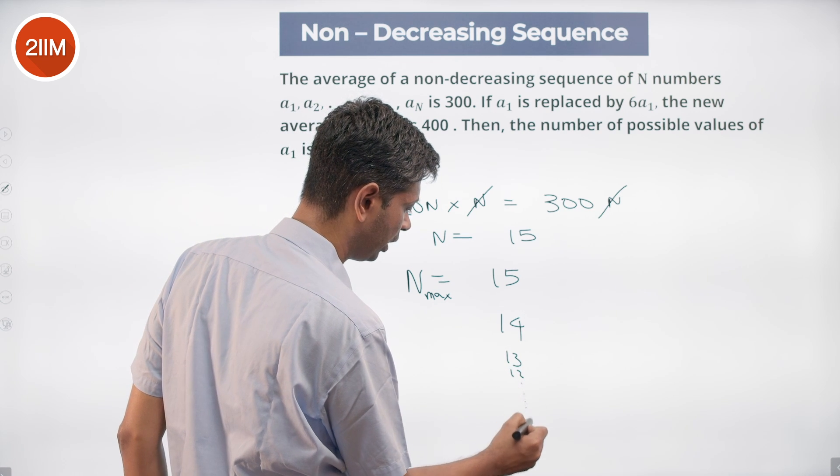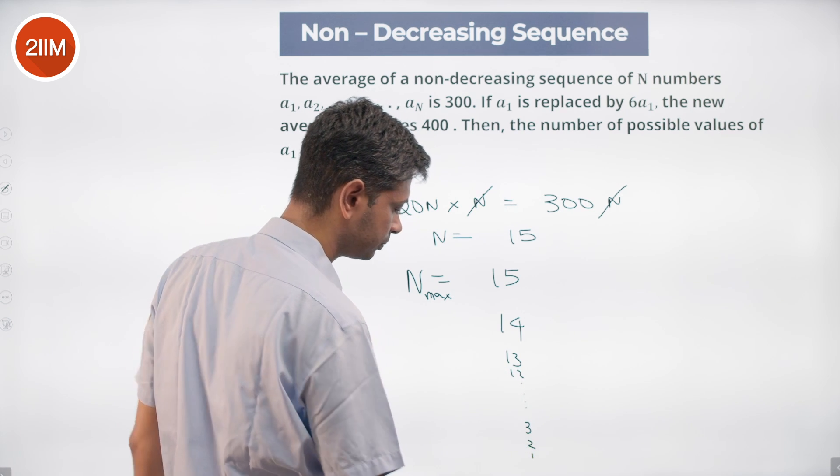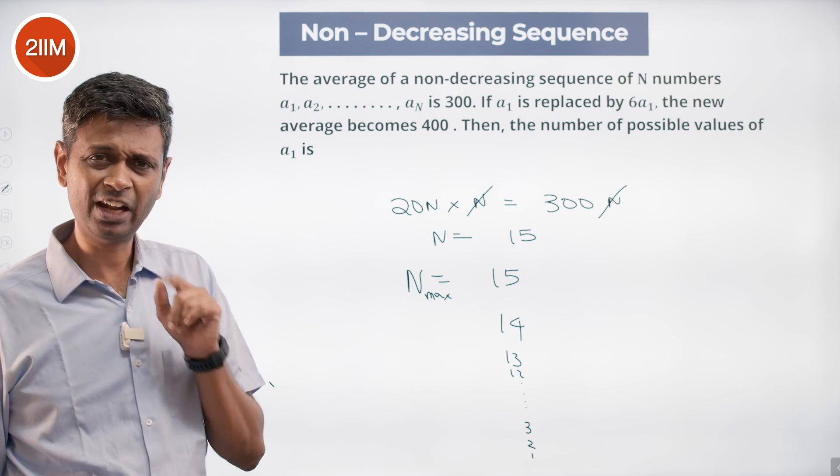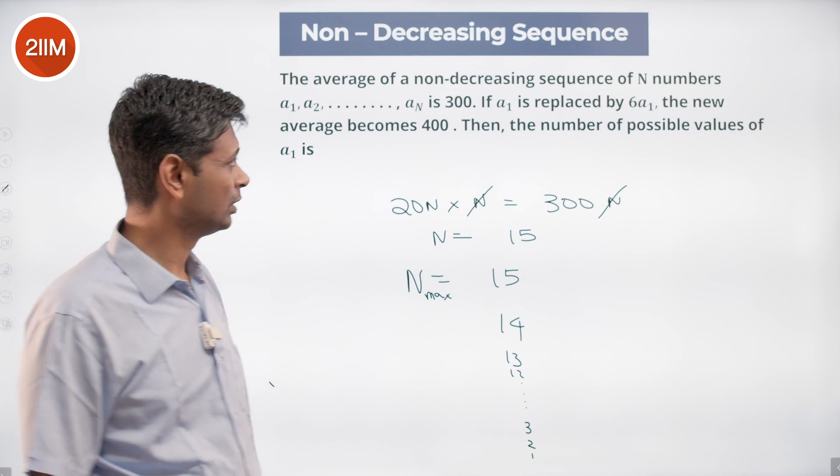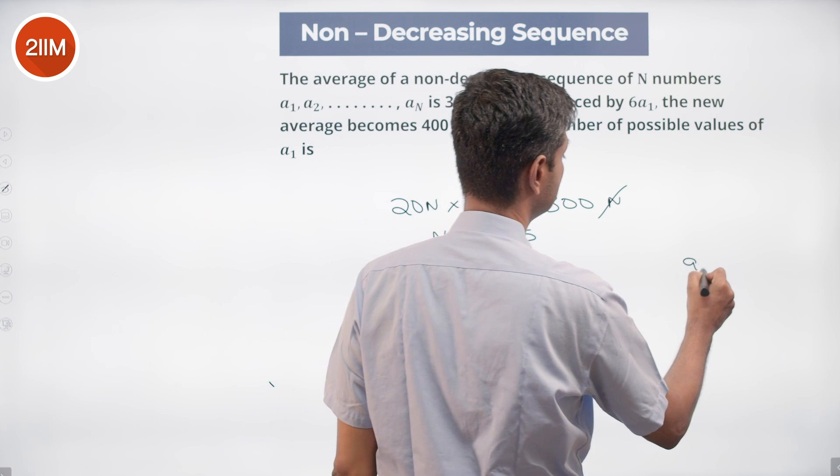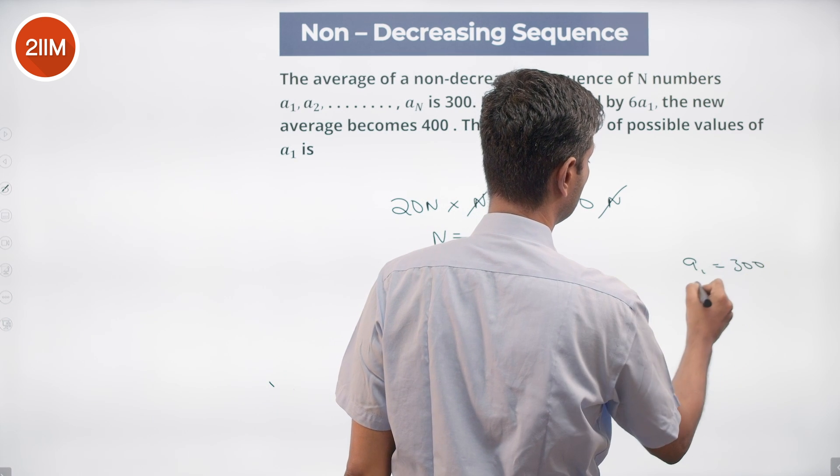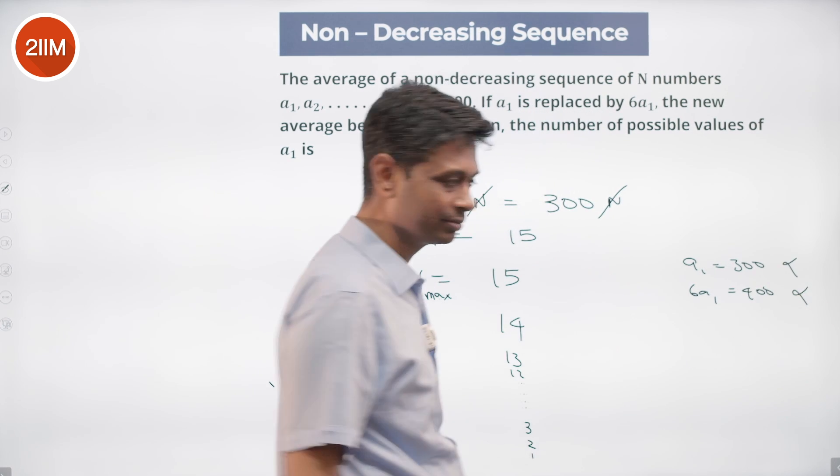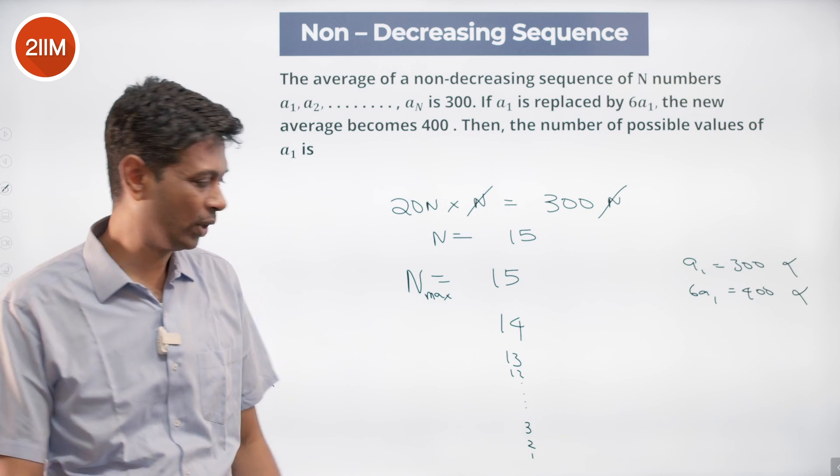N can be 14, 13, 12, all the way till 3, 2, 1. Just want to check the extreme condition N = 1. If N were 1, there's only one term. Then a₁ is 300, but 6a₁ = 400. This is not possible. This doesn't work, so N cannot be 1.